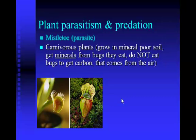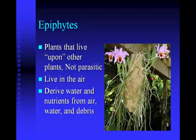The last type of plant I want to talk about are epiphytes — many orchids are epiphytes. 'Epi' means upon, and epiphytes are plants that live upon other plants, but they're not parasitic — they don't harm the plants they live on. They basically get their nutrients through the air, deriving water and nutrients from the air and from debris that washes off their surroundings. And that's plant nutrition.